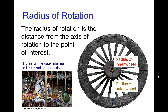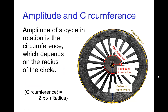When the merry-go-round circles, the horses all travel together in terms of revolutions, but the horses on the inside of the track don't travel as far as the ones on the outside. The inner radius has a smaller circumference and the outer radius has a larger circumference. So we can define the amplitude for rotation as the circumference, and circumference is just two pi times the radius — that's basic geometry.